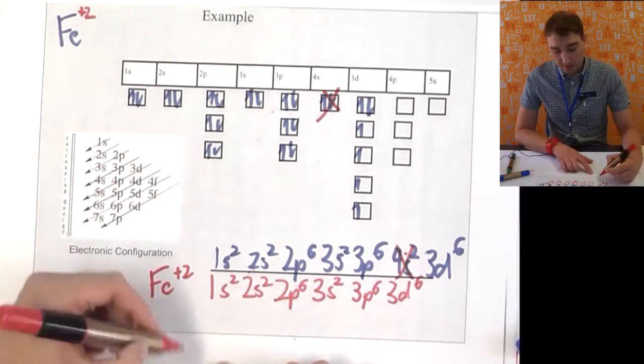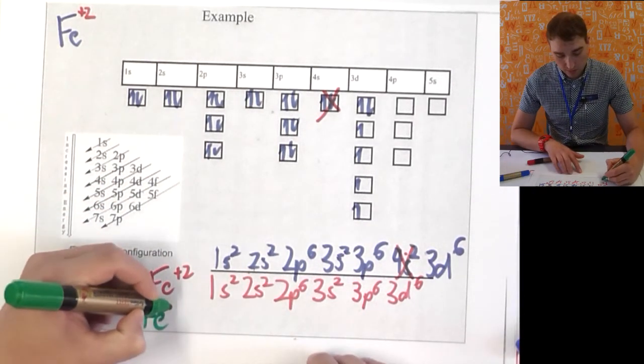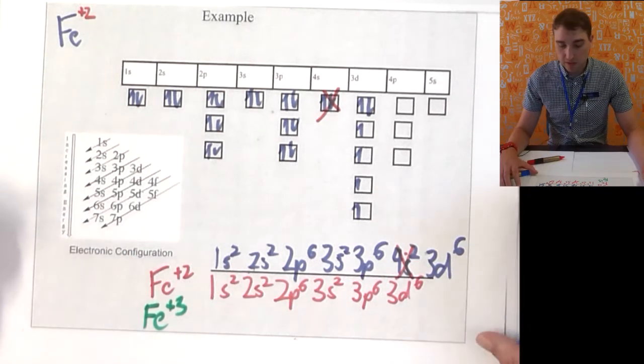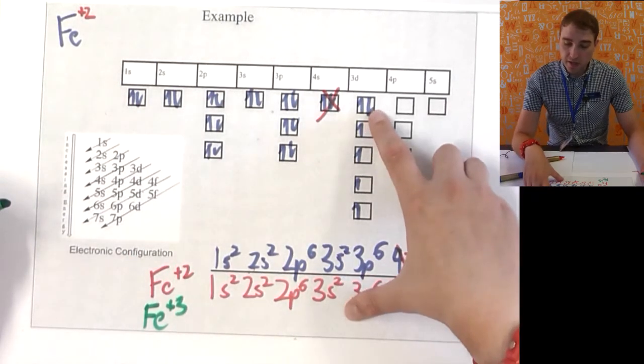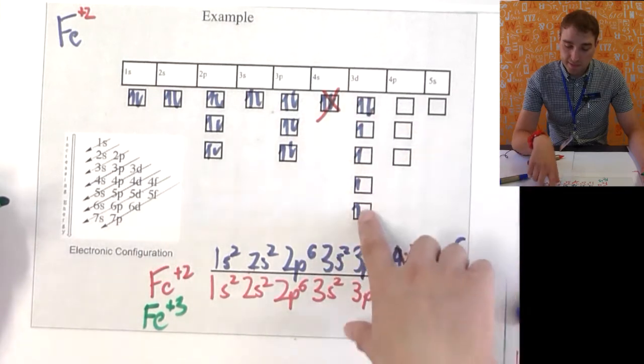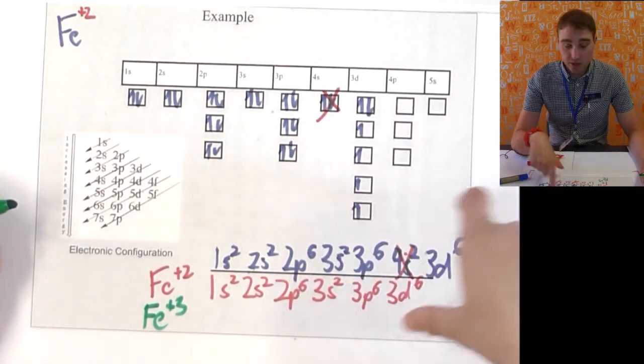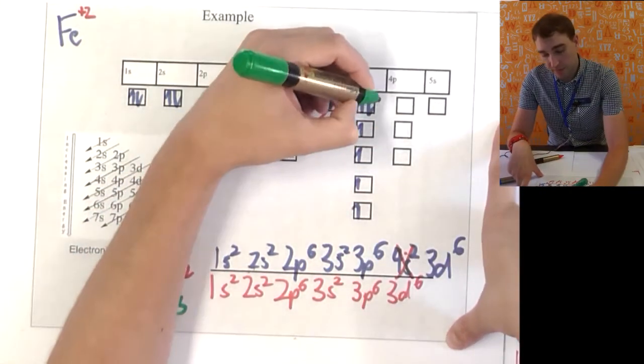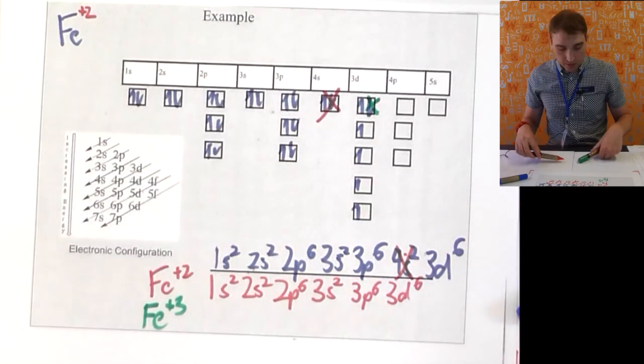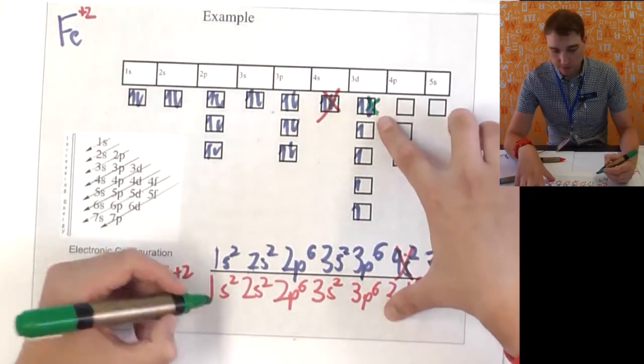The reason why it makes another ion, the Fe plus 3 ion, is if I get rid of this electron here, that gives me a half full 3d subshell, which is very stable. So, I'll get rid of that one too.